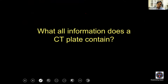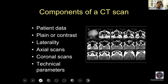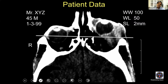What all information does a CT plate contain? You'll have patient data, whether it's a plain or contrast CT scan, and laterality information. Some older generation CT scans — even now some patients come with CT scans done in tier-2 or tier-3 cities — have reversed laterality in coronal scans. It's very important to identify the name of the patient and the medical record number on the scan and correlate with patient age and date of birth. A wrong scan due to patient mix-up in a hospital is a real risk.